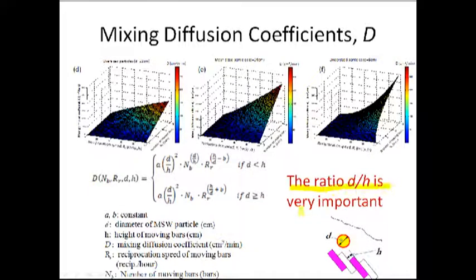Let me talk about mixing diffusion coefficient more. We found ratio D over H is very important. This is the equation that we found about the diffusion coefficient. In this equation, there are a lot of D over H: 1, 2, 3, 4, 5. D means the diameter of the particle, and H is the height of the moving bars.